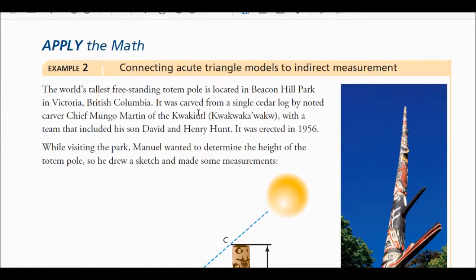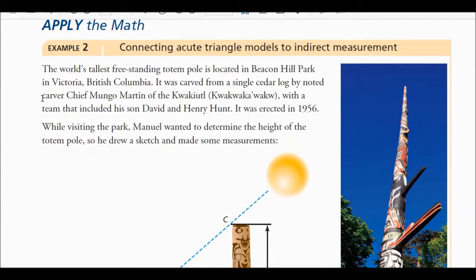As we read example two, it says: The world's tallest freestanding totem pole is located at Beacon Hill Park in Victoria, B.C. It was carved from a single cedar log by noted carver Chief Mungo Martin of the Kwakiutl, with a team that included his son David and Henry Hunt. It was erected in 1956.